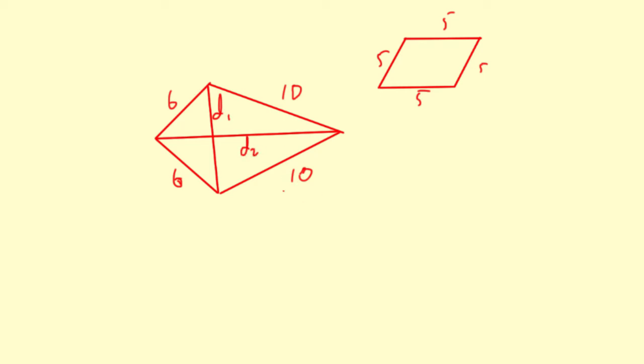What you do is you multiply the diagonals and then divide by two, and that gives you the area of the kite. So the area is one-half diagonal one length times diagonal two length.